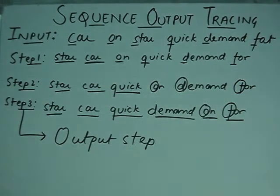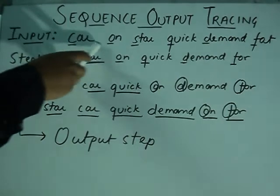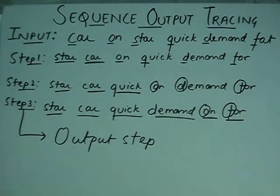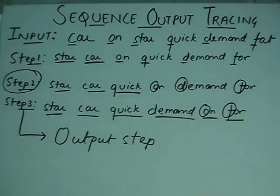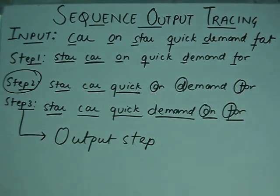So the third step is our output step. Suppose you are asked to find the second step when the input is given — that is a question based on our previous sequence output tracing. This is our second type of sequence output tracing. In the next lecture, we are going to discuss another type of sequence output tracing. Subscribe to our channel and stay tuned for more updates.